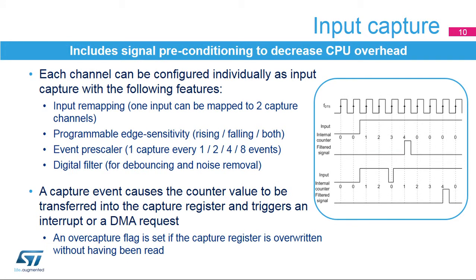Each channel can be individually configured as input capture with signal conditioning options. An input can be mapped on two capture channels to differentiate rising edge from falling edge capture. The edge sensitivity is programmable: rising edge, falling edge, or both edges. An event prescaler allows capture of one event every two, four, or eight events, decreasing CPU burden and improving measurement accuracy over multiple input signal periods.